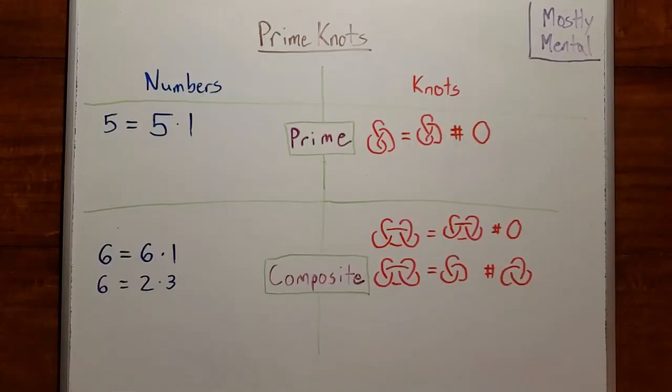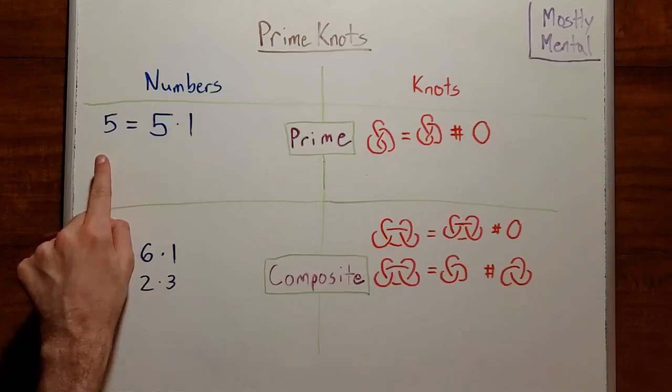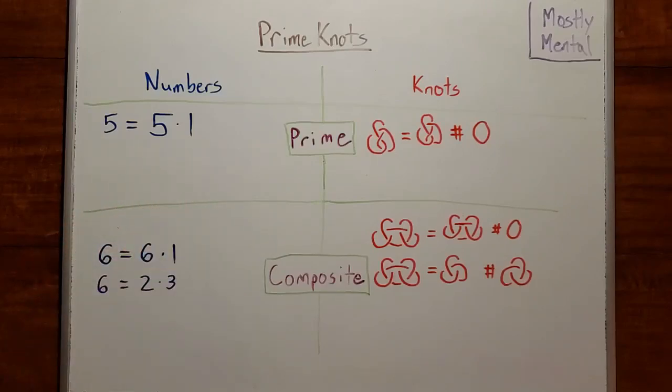Now that we know how to add knots, what does it mean for a knot to be prime? Once again, we can look to the prime numbers for inspiration. What does it mean for a number to be prime? Well, five is prime, since the only way to write it as the product of whole numbers is five times one. So, one of the factors is itself, and the other is one. The only factorization is trivial.